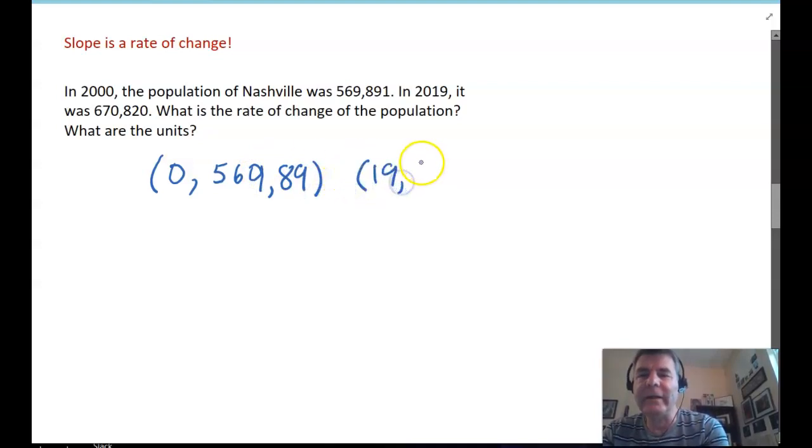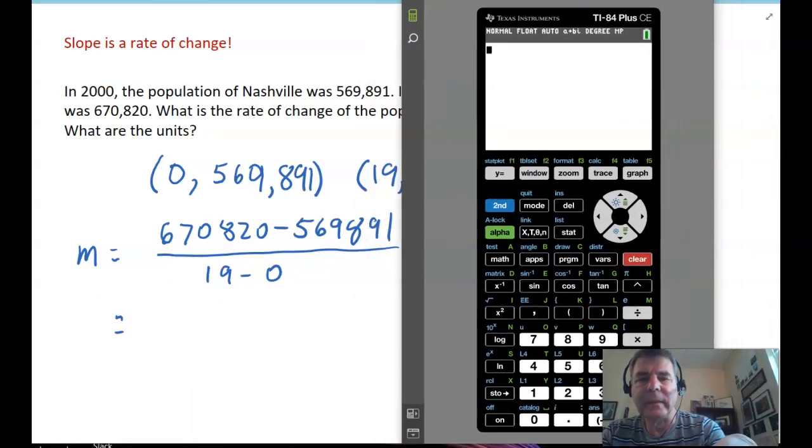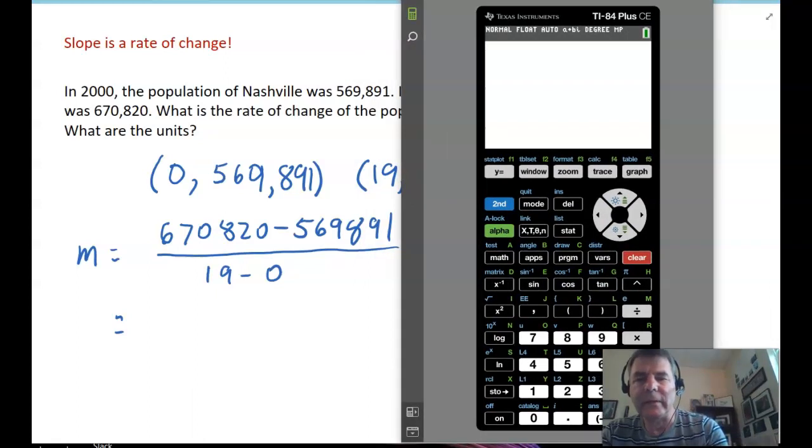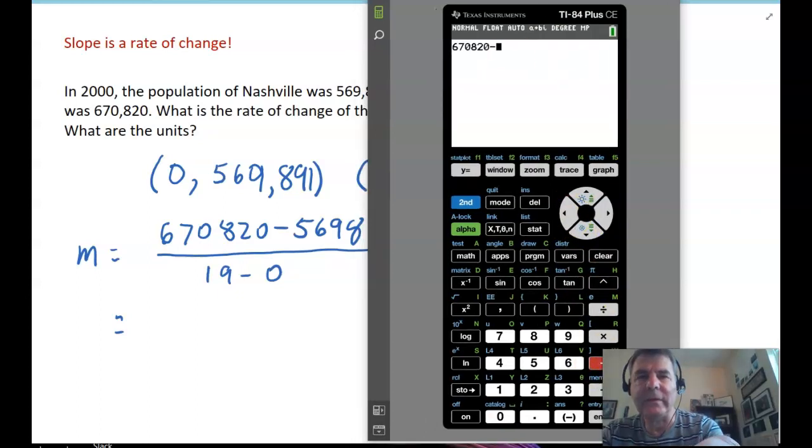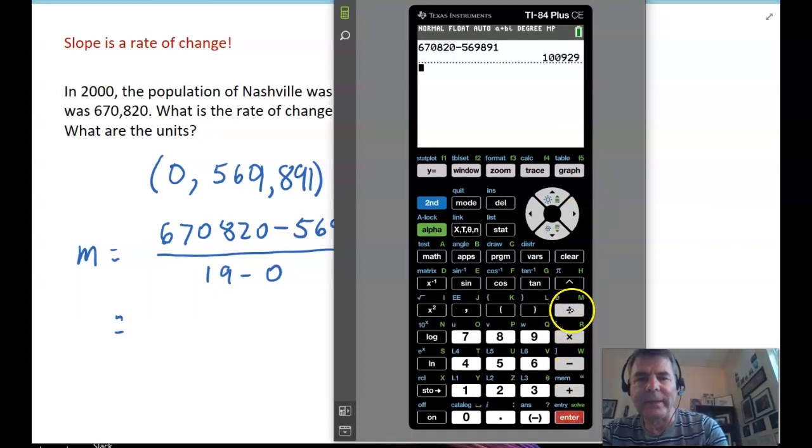And 19 years later, it was 670,820. So, our slope is change in population over change in time. And I'll get my calculator up. And we'll take a look at this. So, it's 670,820 minus 569,891. And I'll divide that by 19 years.